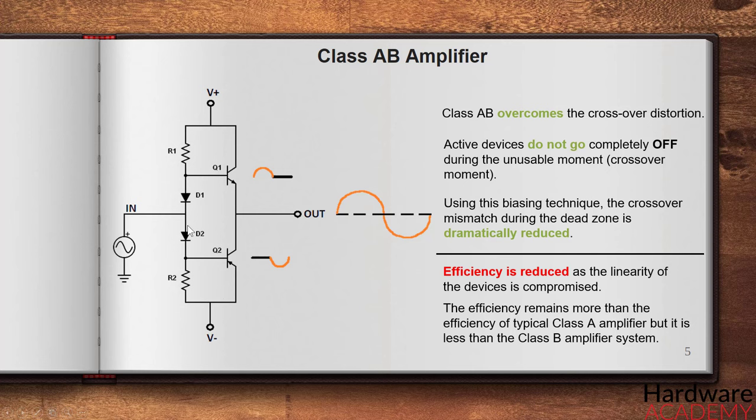Also, the diodes need to be carefully chosen with the exact same rating and need to be placed as close as possible to the output device. In some circuit construction, designers tend to add small value resistors to provide stable quiescent current across the device to minimize the distortion across the output.